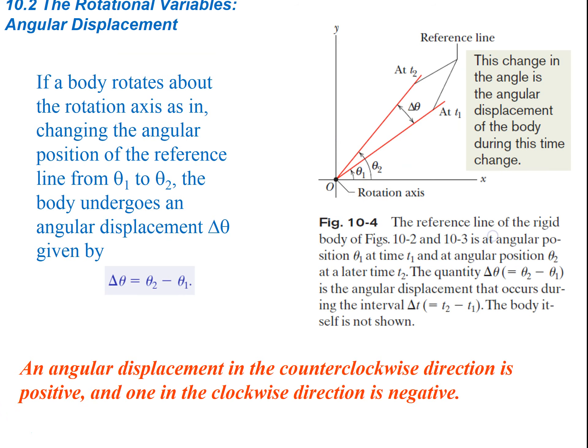If a body rotates, changing the angular position of its reference line from theta-1 to theta-2, the body undergoes an angular displacement delta-theta. The angular displacement is simply theta-2 minus theta-1 — the final position minus the initial position. An angular displacement in the counterclockwise direction is positive, and one in the clockwise direction is negative.